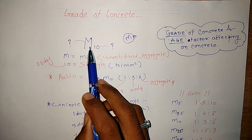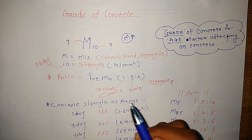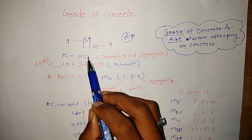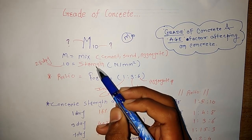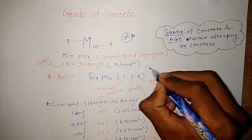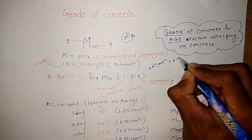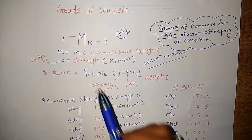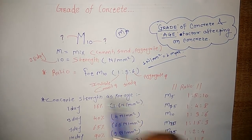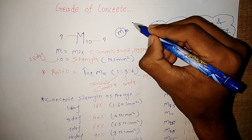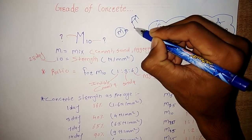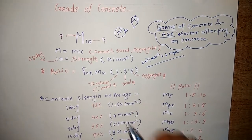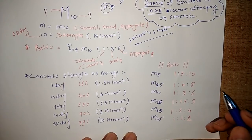M is called a mix — a mixture of cement, sand, and aggregate. Many students don't know this. The number, for example 10 in M10, represents the strength of that concrete after 28 days. The unit is newton per mm square, and since 1 N/mm² equals 1 MPa, we can call it MPa. For M10 grade with a mix ratio of 1:5:10, if we cast a 15×15×15 cm cube and check its compressive strength after 28 days, we get 10 MPa — that is the grade of concrete.